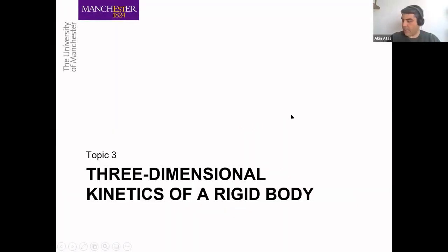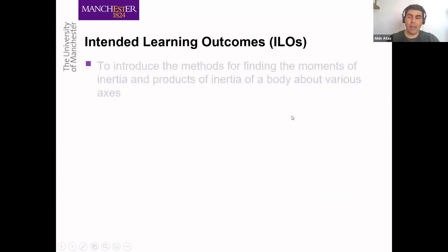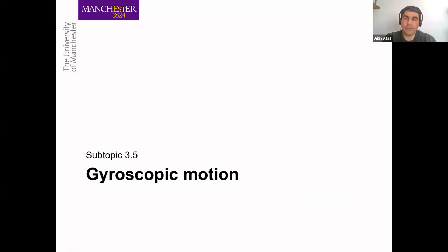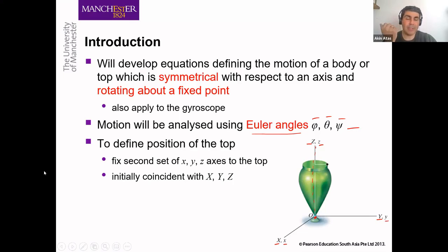This week is our last week teaching kinetics of 3D rigid bodies. Based on our intended learning outcomes, we are finalizing with gyroscopic motion this week. You can find the lecture videos on Blackboard that I uploaded earlier. We basically discussed what a gyroscope is and what a spinning top is used for in engineering applications.